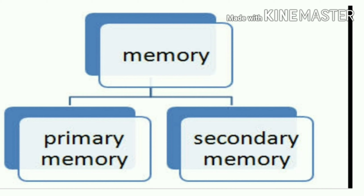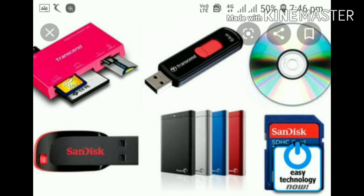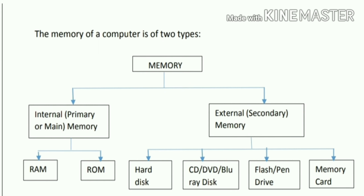Memory is broadly divided into primary memory and secondary memory. Primary memory is again divided into RAM — random access memory — and ROM — read-only memory. Secondary memory consists of external devices which we use to store data, like CD and pen drive, which can be moved and used again. It is not attached to the computer.